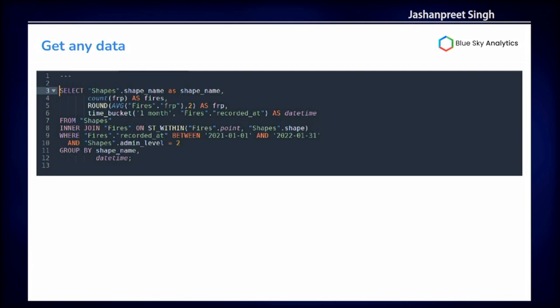We can change any values — the datetime range, which shapes we're selecting, and what aggregate we want: monthly, weekly, yearly, or quarterly. So this query will answer all questions around any sort of point-in-shape dataset. And it's not limited to points — you can have polygons within other polygons varying temporally as well.